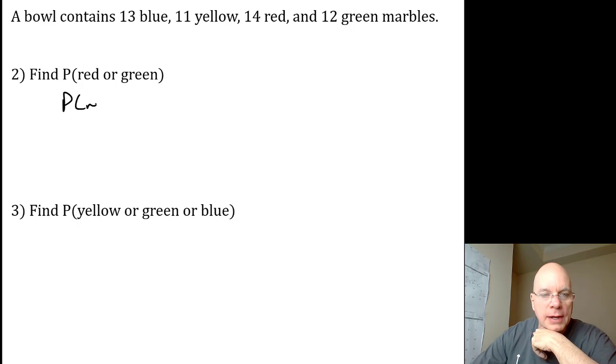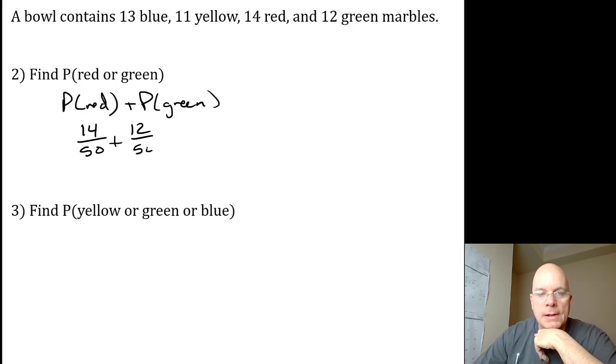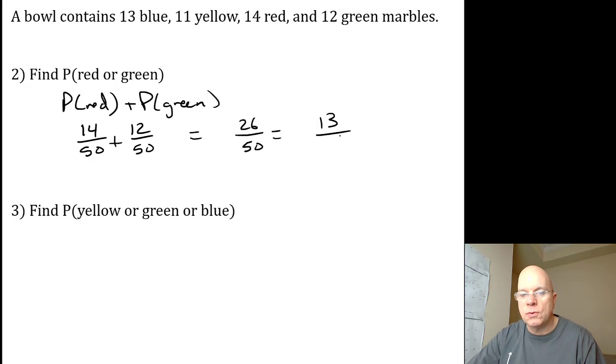These are mutually exclusive, so I don't need to subtract the intersection. The red is 14/50 and the green is 12/50, for a probability of 26/50, simplified to 13/25.